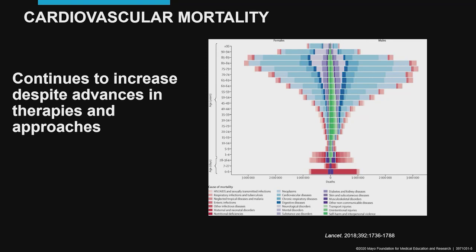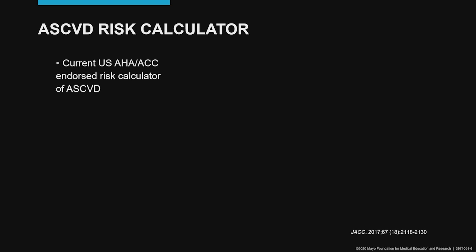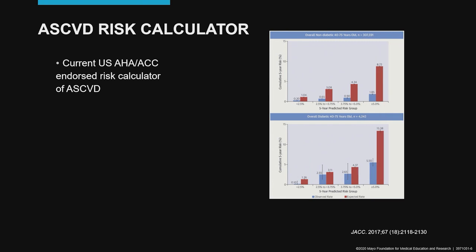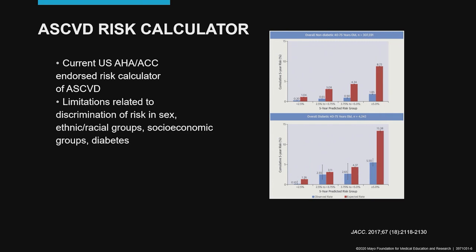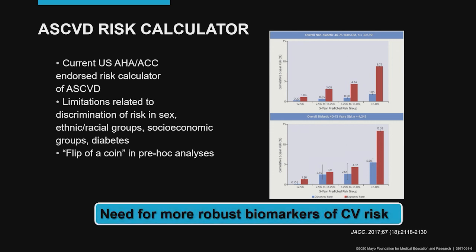Cardiovascular disease continues to increase despite advances in therapies and novel approaches. The ASCVD risk calculator is the only calculator endorsed by American guidelines for assessment of atherosclerosis. However, this calculator has important limitations related to sex, different ethnic groups, socioeconomic groups, and diabetes. Moreover, in pre-hoc analysis, some experts consider the ASCVD risk calculator as a simple flip of a coin, underscoring the importance for more robust biomarkers of cardiovascular risk.